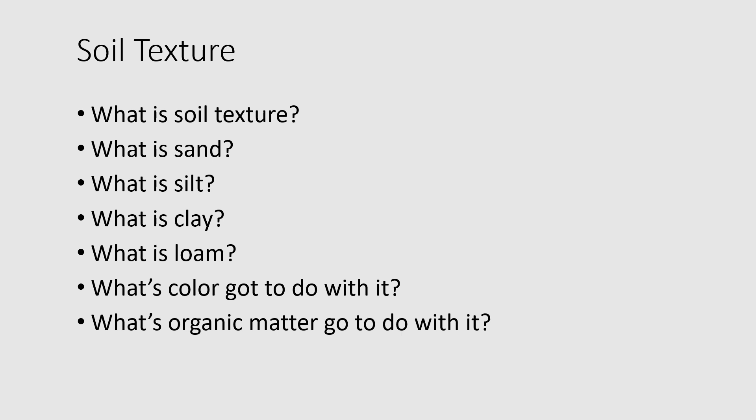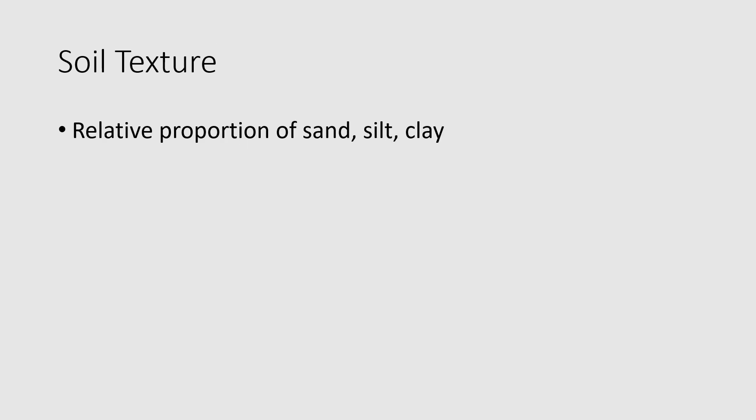So what is soil texture? It's a very specific definition in soil science — it's the relative proportion of sand, silt, and clay. What is sand? These are the larger particles of soil. Anything larger than two millimeters, about a tenth of an inch, is a gravel, cobble, or stone. Sands go down to 0.05 millimeters; you can see those with your eyes if you have good eyesight.